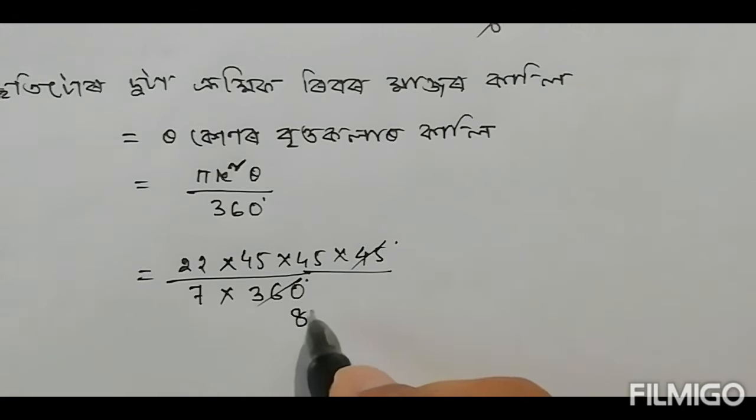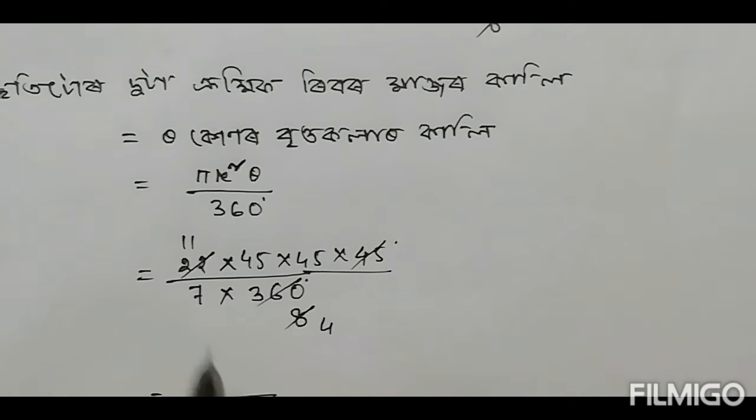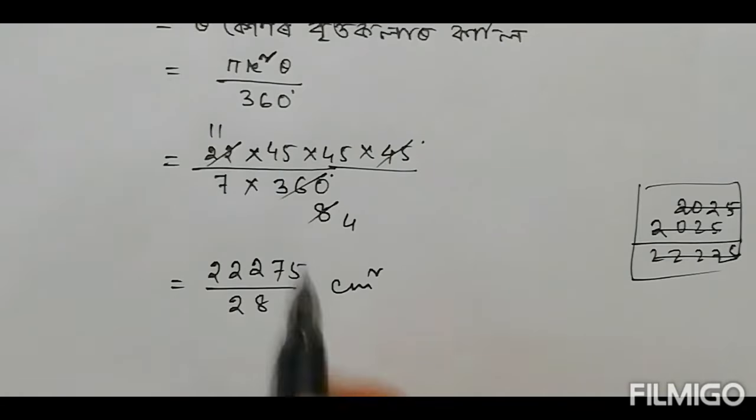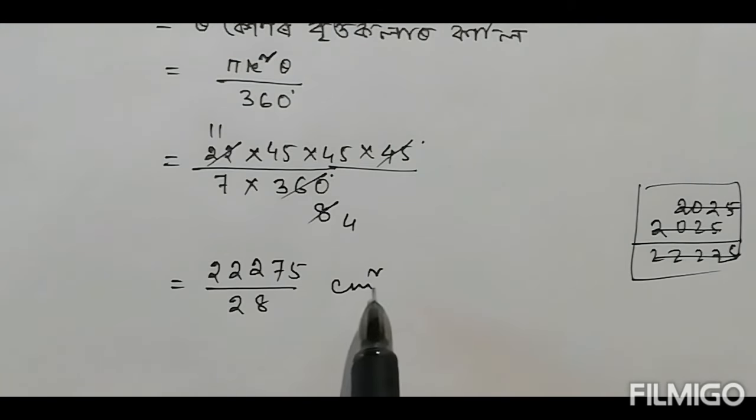The calculation gives us 360 divided by 8, which equals 45 degrees per sector. The final area is 22,275 divided by 28 cm².